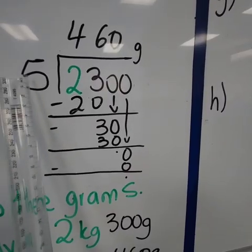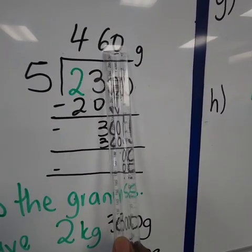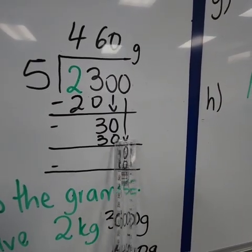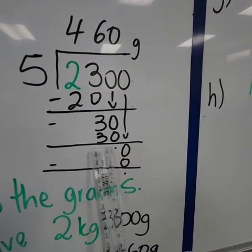Then we repeat. 5 into 30, or 30 divided by 5 will give us 6. Then we multiply 6 times 5, which will give us 30. Then we minus 30 minus 30. That will give us a 0.